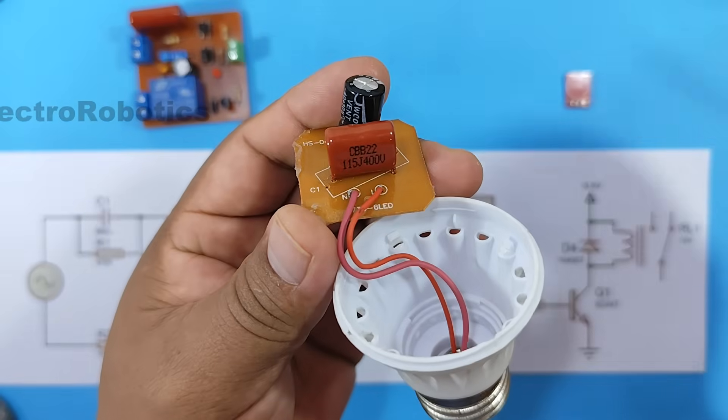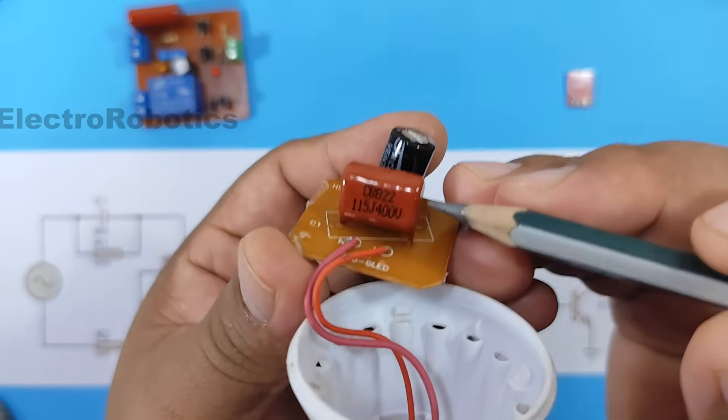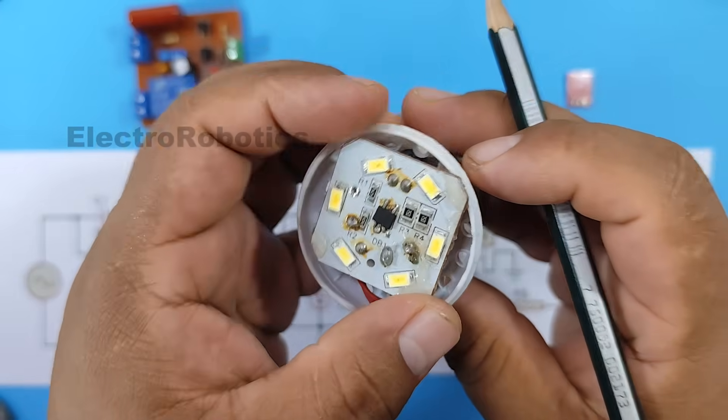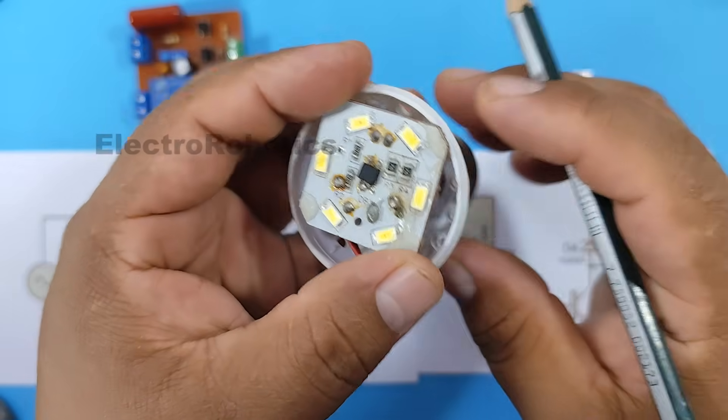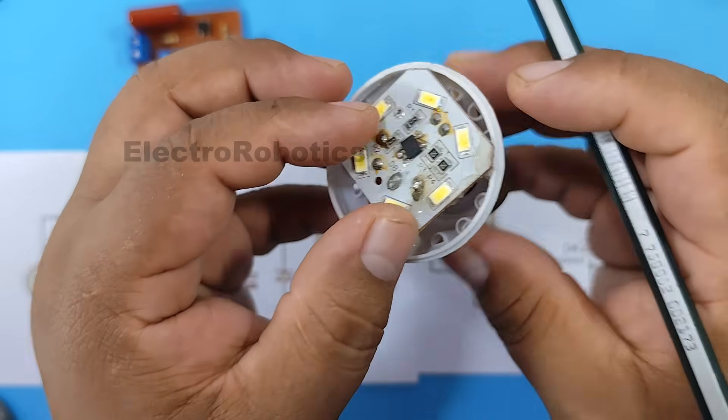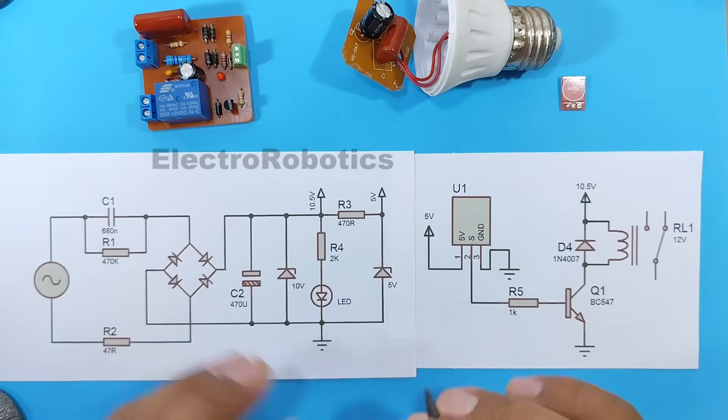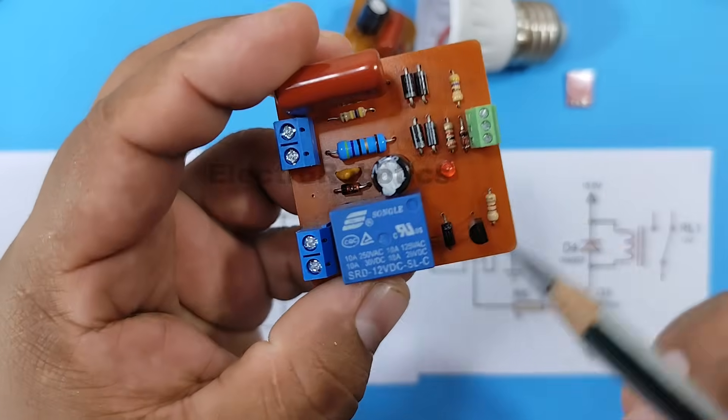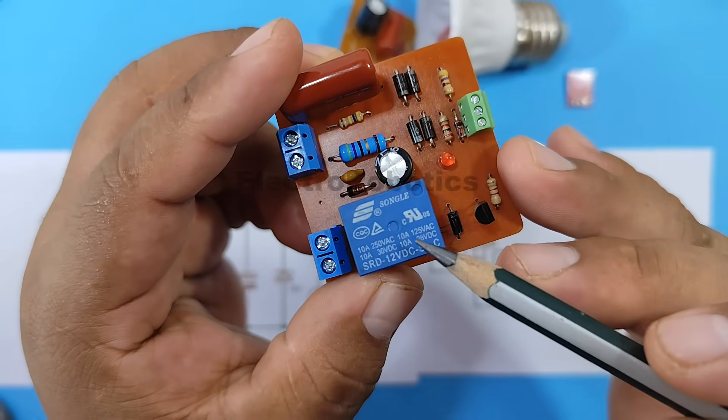And as you may remember, a capacitive source is primarily composed of a capacitor, which limits the current for all its components. Therefore, it's very important to manage the consumption of each component.